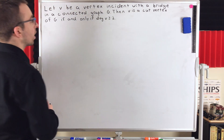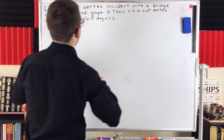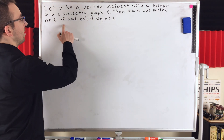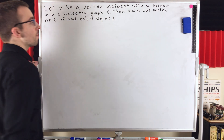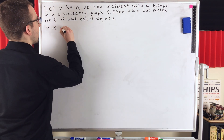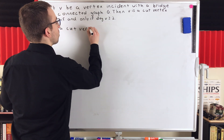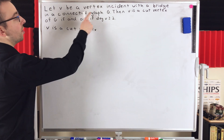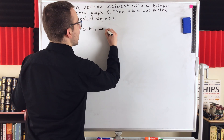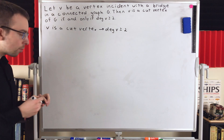Let's go ahead and get into the proof. We're going to begin by proving the first direction of this if-and-only-if theorem: if V is a cut vertex, and we're assuming V is incident with a bridge, then V has to have a degree greater than or equal to 2. To prove this, we're going to prove the contrapositive, assuming that the degree of V is less than 2 and showing that forces V to not be a cut vertex. Remember that our graph G is also assumed to be connected.